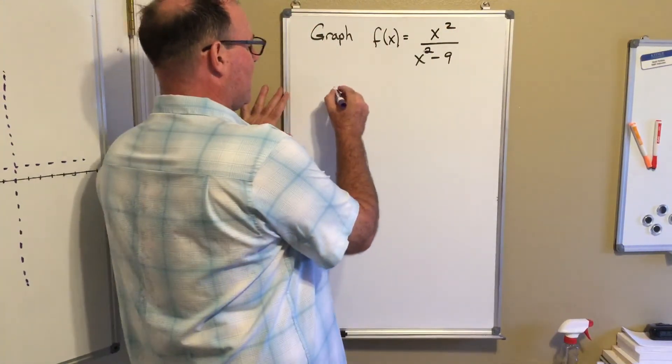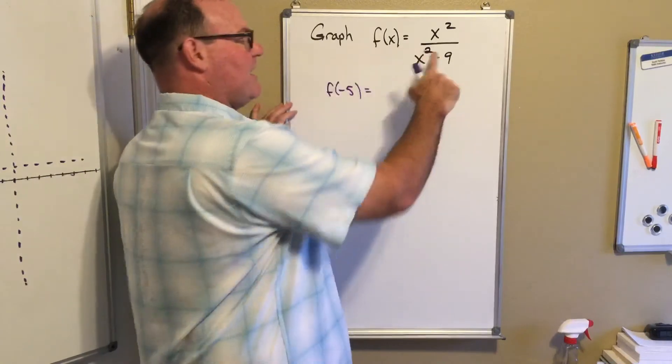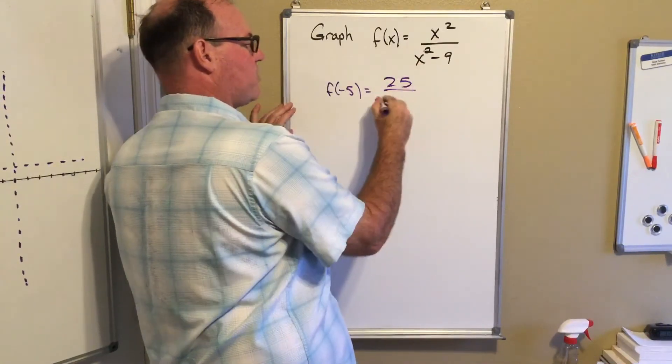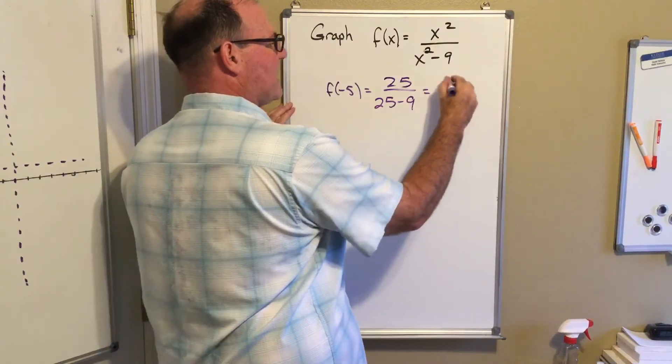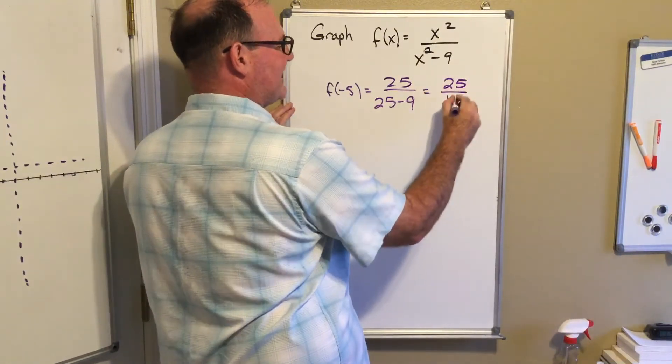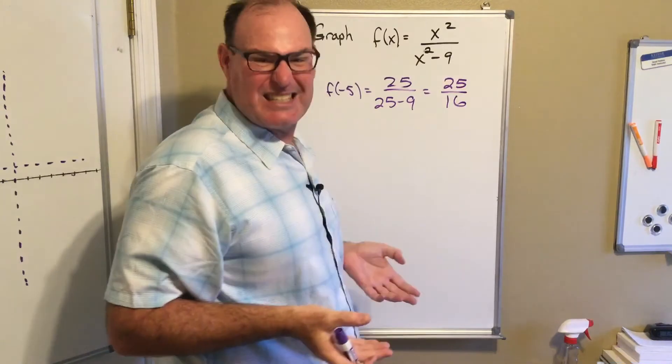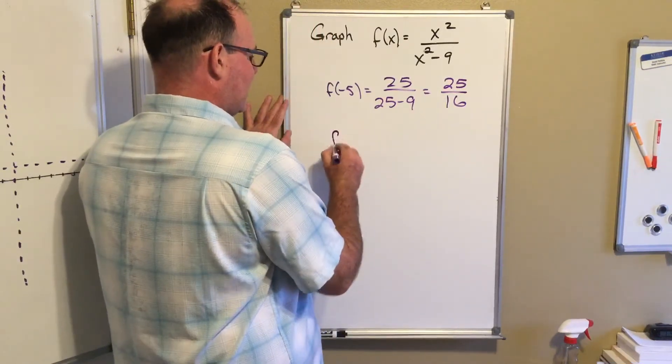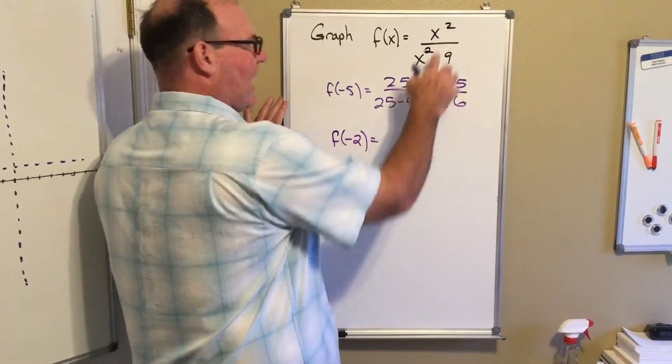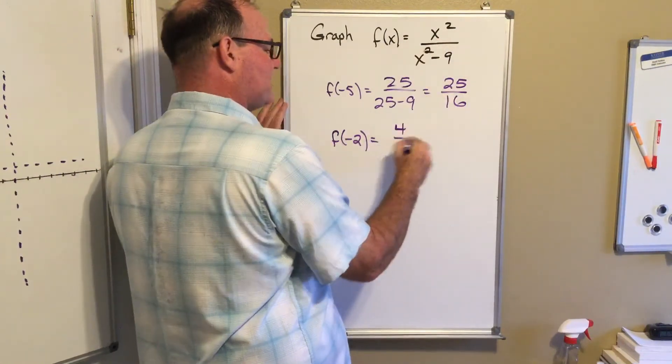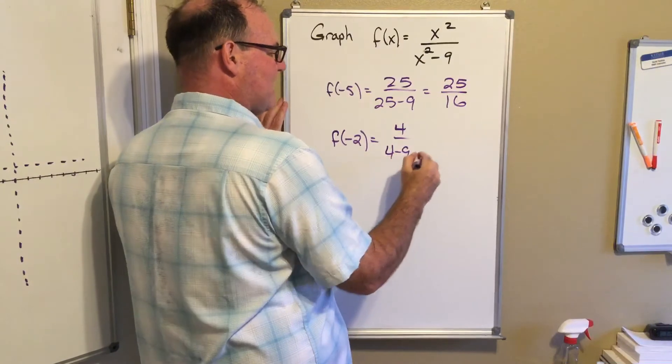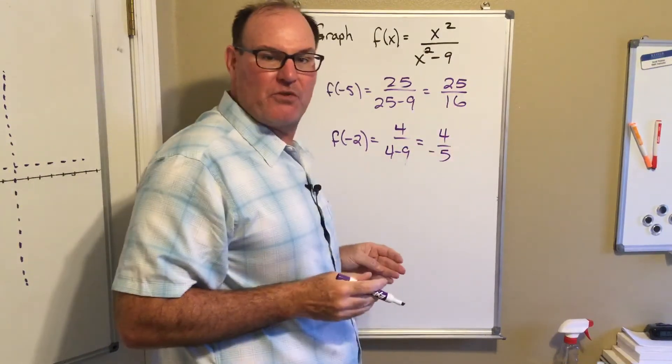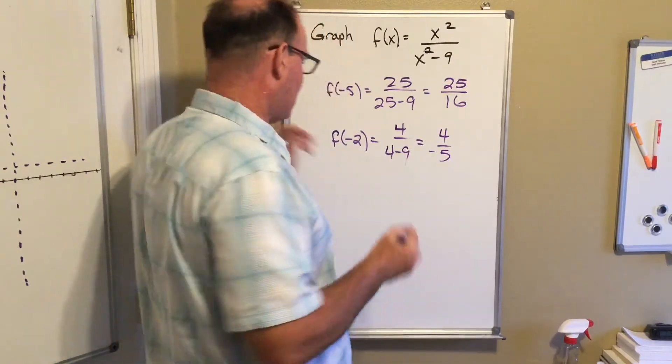Here goes. When I plug in negative five, negative five squared is 25. Negative five squared is 25 minus nine, so that's 25 over 16 - one and nine sixteenths, so more than one and a half. When I plug in negative two, I get negative two squared or four in the top, negative two squared or four minus nine in the bottom, so that's four over negative five or negative four fifths - negative point eight.